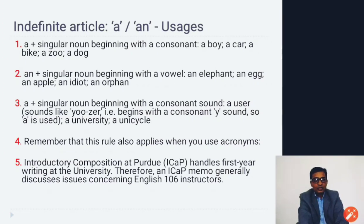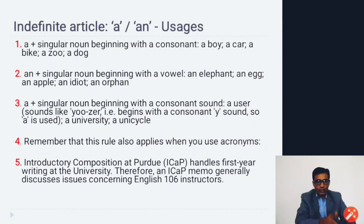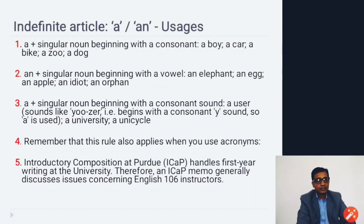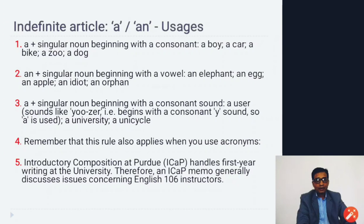An important rule: 'a' is used before a singular noun beginning with a consonant sound. There are five vowels in English: a, e, i, o, u. If the first letter of a countable noun is a consonant sound, we place 'a'; if it is a vowel sound, we place 'an'. For example, 'a boy' because 'b' is a consonant, but 'an apple' because 'a' is a vowel.